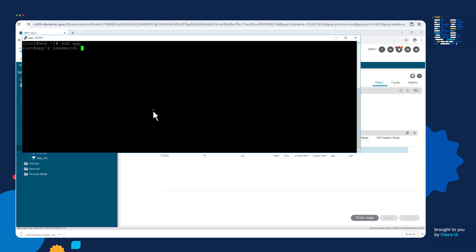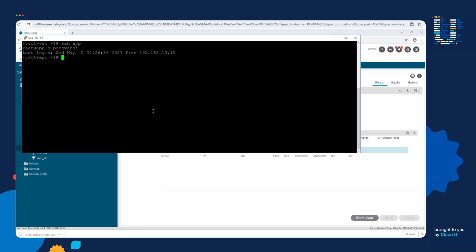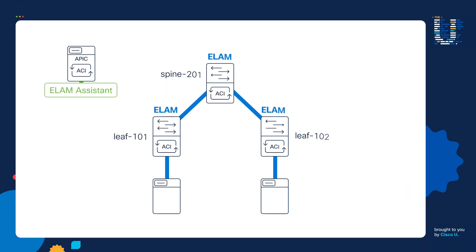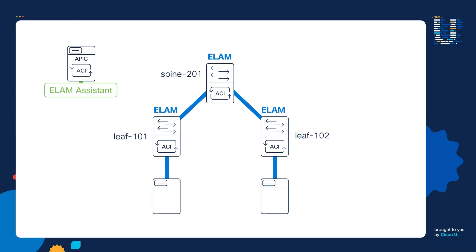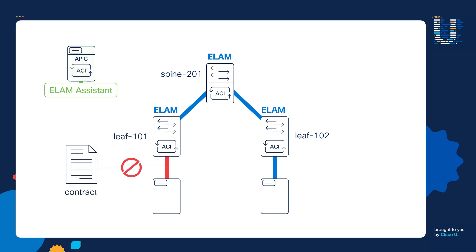Let's put in the password. We just successfully SSH'd into the app server. Quick recap: we troubleshot an issue using the ELAM Assistant. We learned leaf 101 was dropping the traffic due to a contract drop, and that assisted us in resolving the issue.